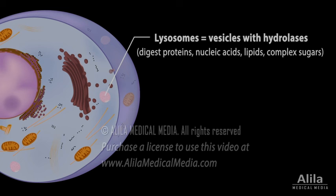Lysosomes are vesicles containing hydrolases that break down macromolecules into their building units, which can then be recycled. The enzymes are activated by the acidic environment within lysosomes. In white blood cells, lysosomes digest phagocytized bacteria and play a role in immune response.